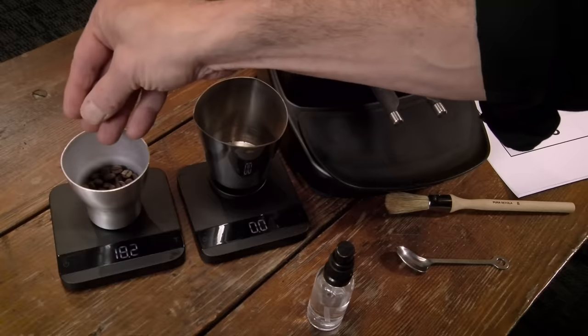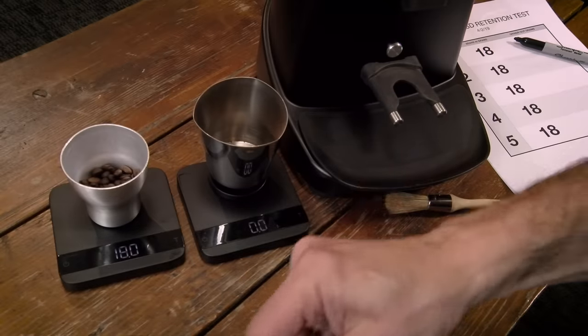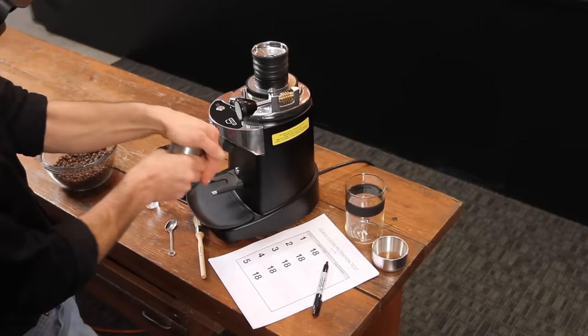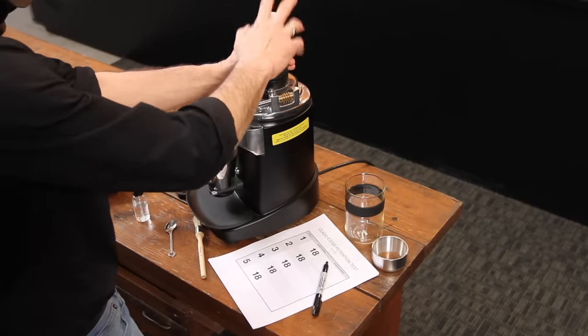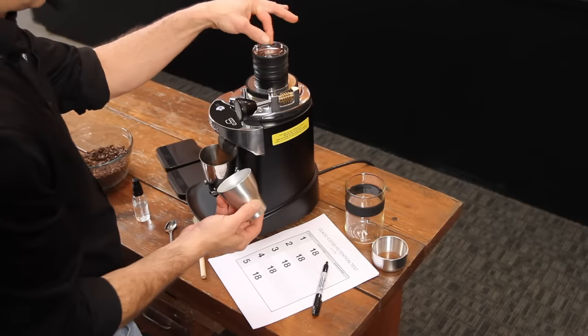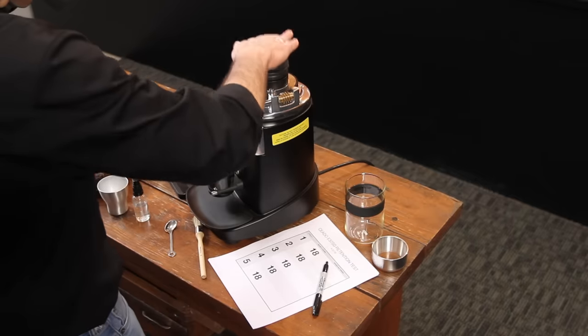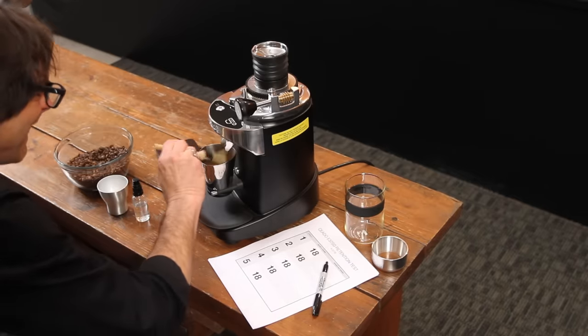For the retention tests I'll weigh out exactly 18 grams of beans, use two sprays from the RDT sprayer, grind.